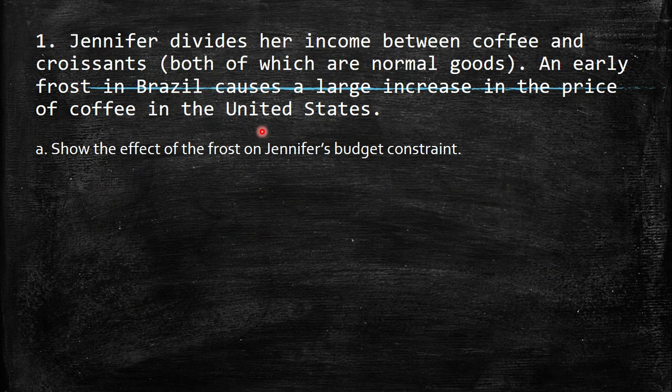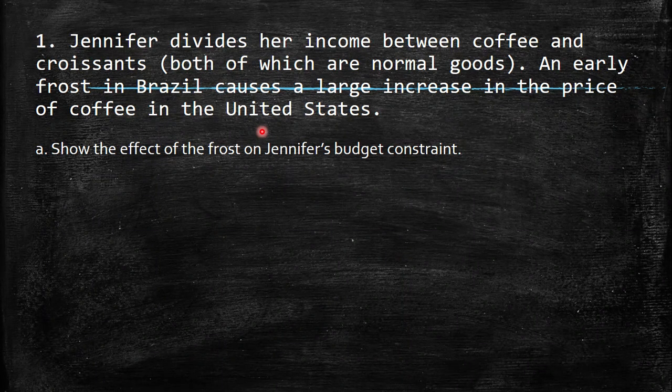Jennifer divides her income between coffee and croissant, both of which are normal goods. Remember, normal goods are those goods where when the price goes up, naturally the demand goes down. On the other side, if the price goes down, naturally the demand will increase. When we think about income, when income increases, the demand for normal goods will increase as well.